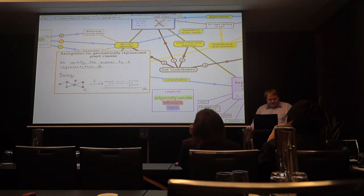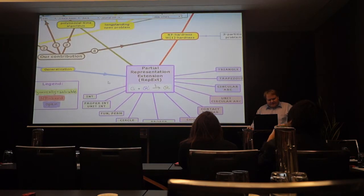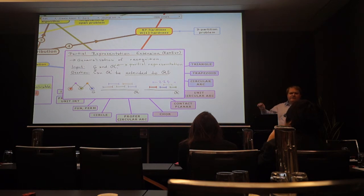So this is recognition. So we studied the generalization of it which we call partial representation extension. It is a quite nice problem. Very natural one. Surprisingly it was not considered until 2010. And so the idea is I give you a graph and a part of the graph is already drawn for you. And you ask can I add the remaining vertices. So this representation R prime is partial representation is a representation of an induced subgraph.